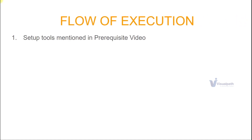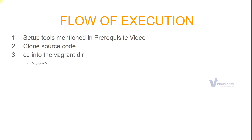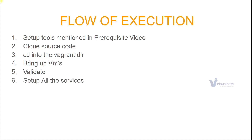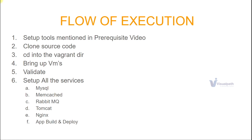Finally, let's understand the flow of execution. First, we are going to set up all our tools from the prerequisite videos. If you already have that set up, you can clone the source code for the project. We're going to cd into the Vagrant directory in the source code — there will be a Vagrantfile — and bring up our VMs automatically from that Vagrantfile. We'll validate all our virtual machines to confirm they're up and running and able to interact with each other. Then we're going to set up all our services one by one: first MySQL, then Memcached, then RabbitMQ, then Tomcat, and finally Nginx. We're also going to build and deploy our Java application, and finally verify everything from our browser.